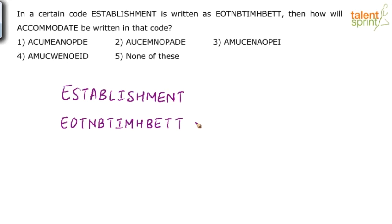So what is the logic? If you observe, alternate letters are intact. There's no change. If you see the first one, first letter E is same, T is same, B is same, right? I, H, E, T. So basically, all these odd positions 1, 3, 5, 7, 9, 11 and 13 have not been touched. They remain as it is.